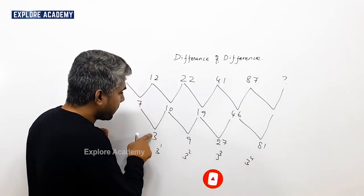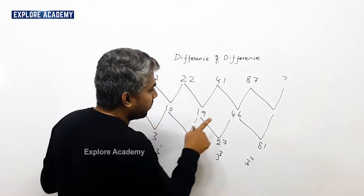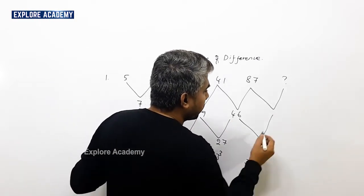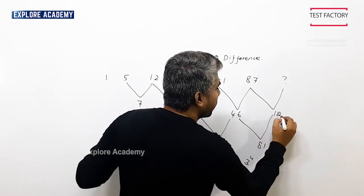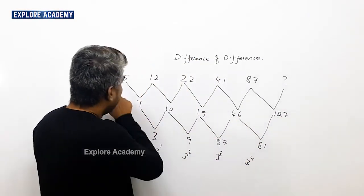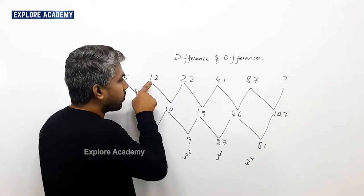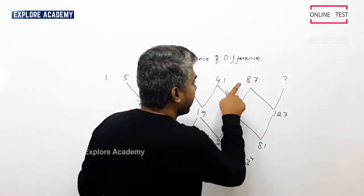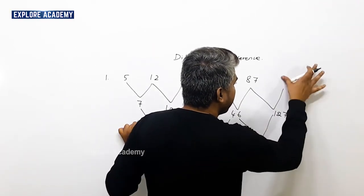7 plus 3 is 10. 46 plus 81 is 127. 5 plus 7 is 12. 87 plus 40 is 127.